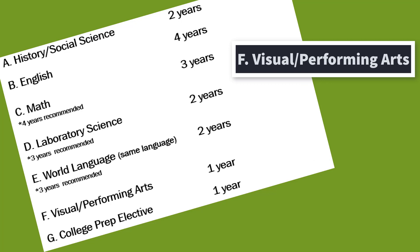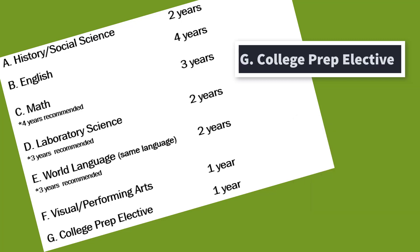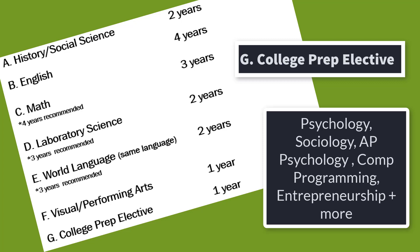Subject requirement F is visual and performing arts. There is a one-year requirement. Some examples of classes that meet this requirement are art, drawing, dance, band, photography, theater, and ceramics. Subject requirement G is one year of a college prep elective. Some examples of classes that fit this requirement are psychology, sociology, AP Psychology, computer programming, and entrepreneurship.